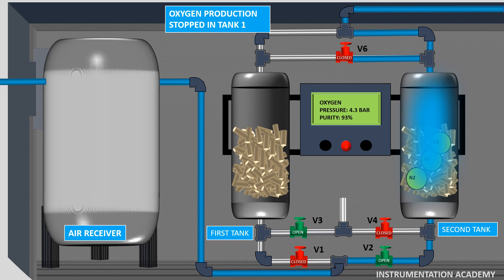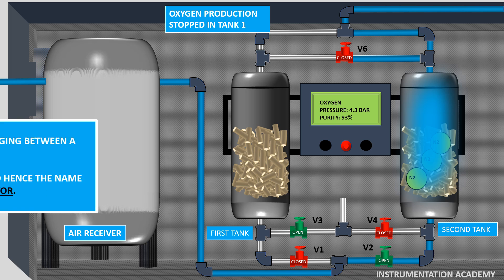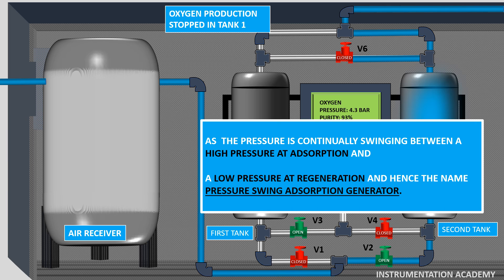By doing that, the system makes room for new nitrogen molecules to attach to the zeolite in the next adsorption phase. These operations are alternatively repeated in both the tanks and the pressure is continually swinging between a high pressure at adsorption and a low pressure at regeneration, and hence the name pressure swing adsorption generator.